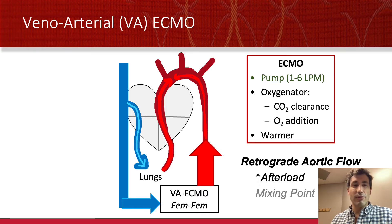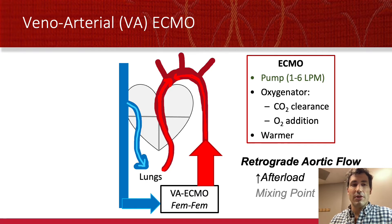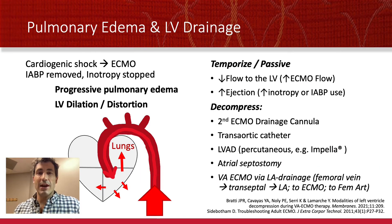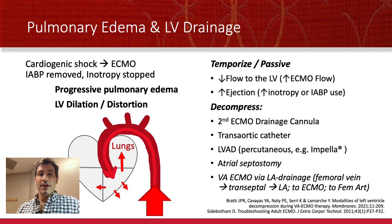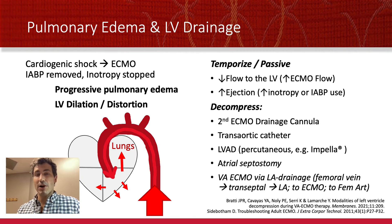Retrograde aortic flow has important clinical implications. It is afterload-producing, and if the heart isn't working well, adding significant afterload causes problems. Sometimes that increased afterload — or the presence of aortic insufficiency — is delivered directly to the LV, which will progressively dilate, distort, and fail even worse. Blood will also back up into the lungs. Patients on VA ECMO are prone to this backflow and back pressure into the LV, resulting in progressive pulmonary edema. It happens frequently because we stop inotropy or discontinue balloon pumps when patients go on ECMO, thinking we've fixed the problem. This is very real, very severe, and warrants immediate therapy.